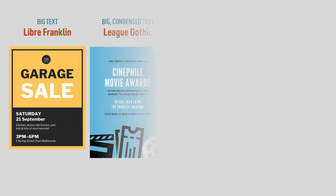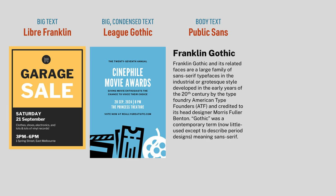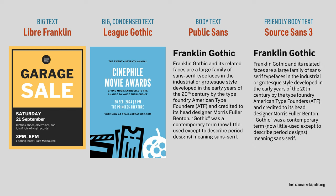I recommend Libre Franklin if you're making something like a poster. Or if you need your text to be big and condensed, there's League Gothic. If you want something for body text, Public Sans is the way to go. Or Source Sans 3 if you're looking for something friendlier, maybe paired with Oswald for a more condensed heading. All these fonts are free to use, and their download links are in the description below.